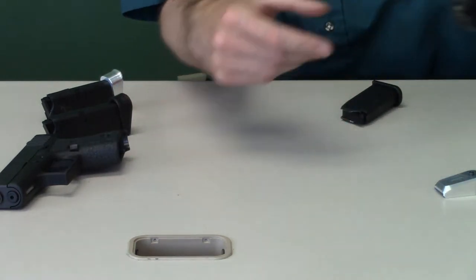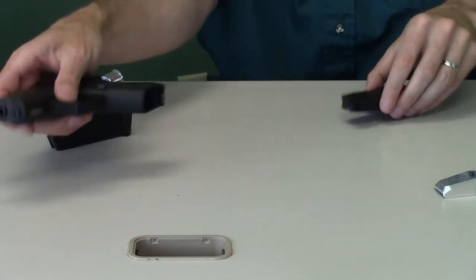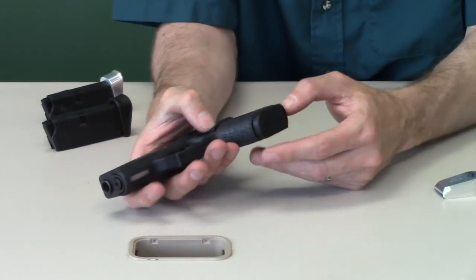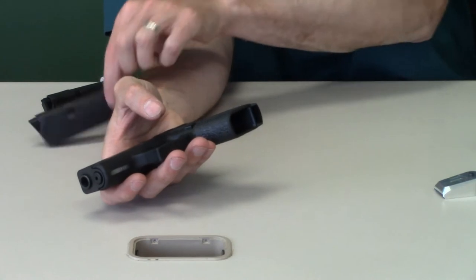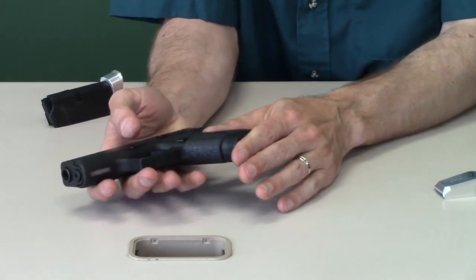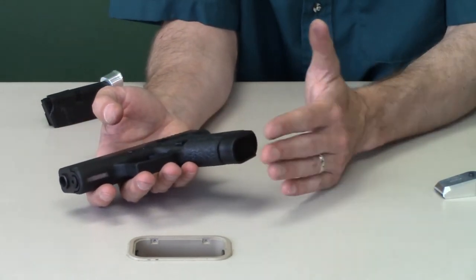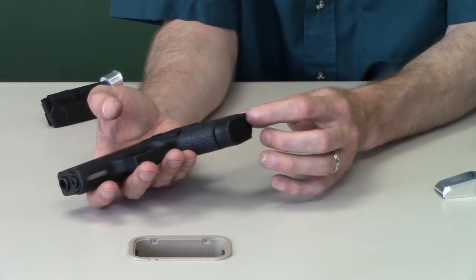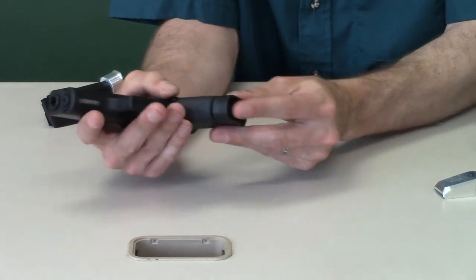The same logic applies to the 43. Setup like this, the gun is practically invisible. Setup with the factory plus one on it, it's pretty good still, but it starts to print a little bit around these sharp corners. It's not bad, but it starts to print a little bit around those sharp corners.